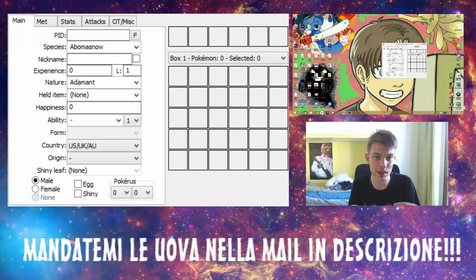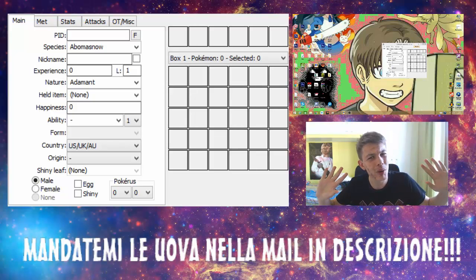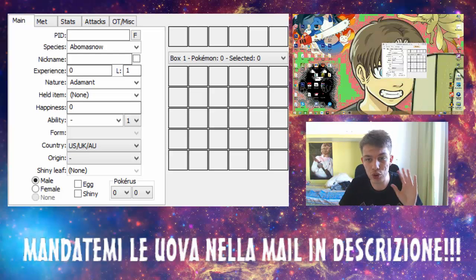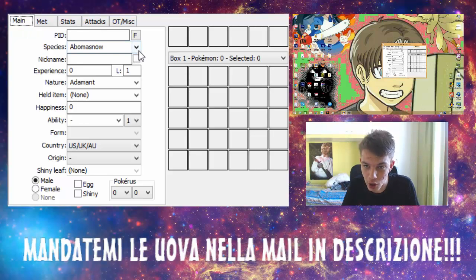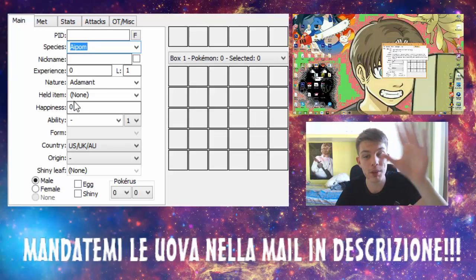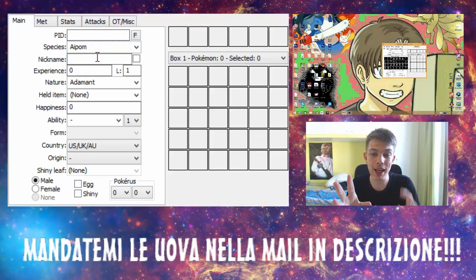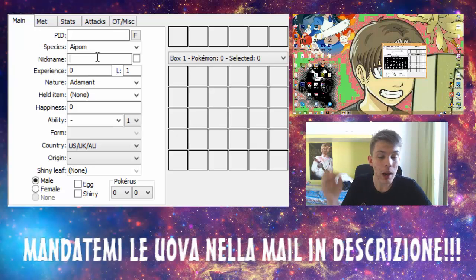Nella sezione main avete la specie di Pokemon, quindi potete selezionare qualsiasi Pokemon. Ad esempio potete prendere la scimmietta. Potete dare a questo Pokemon un nickname: il nickname sarà dell'uovo e non del Pokemon. Se voi volete chiamare la scimmietta in un certo modo, potete farlo.